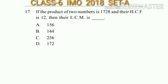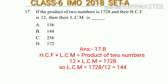Question number 17: If the product of two numbers is 1728 and their HCF is 12, find their LCM. As we know, the product of two numbers equals their HCF multiplied by their LCM. So 1728 equals 12 multiplied by LCM, giving LCM equals 1728 divided by 12, which is 144. So the answer will be option B.